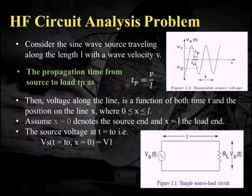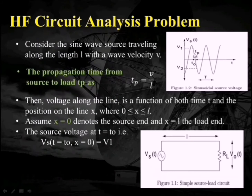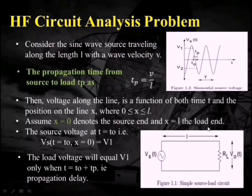For example, at the source end, if we consider X equal to 0 and this length is L, then X will be equal to L at the load end. If we assume X equal to 0 and T equal to T0, then the voltage at the source terminal will be equal to V1, so Vs(T) will be equal to V1. The load voltage will become equal to V1 only after the propagation time over length L. So exactly after time T0 plus Tp, V0(T) must be equal to V1.